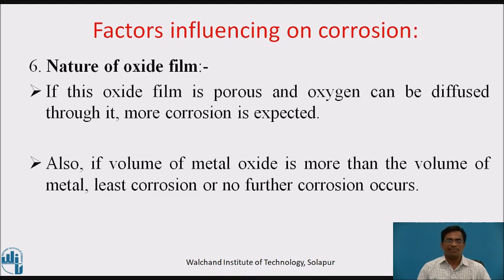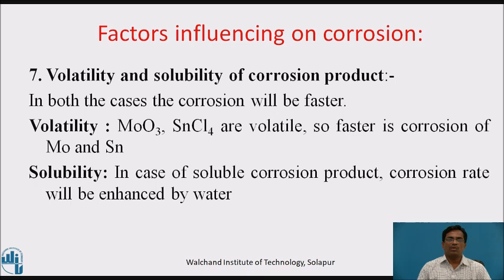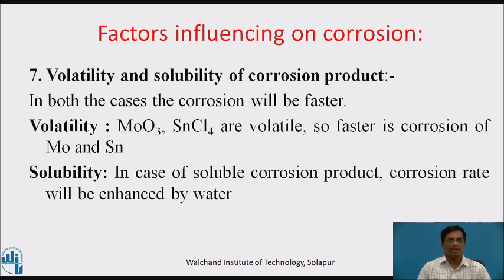Sixth, nature of oxide film — if the oxide film is porous and oxygen can diffuse through it, more corrosion is observed. Also, if the volume of metal oxide is more than the volume of metal, least or no further corrosion occurs. Seventh, volatility and solubility — oxides of molybdenum or tin chloride are volatile, so faster is the rate of corrosion in case of molybdenum and tin. In case of solubility, the corrosion product gets dissolved, and the rate of corrosion is enhanced by water.